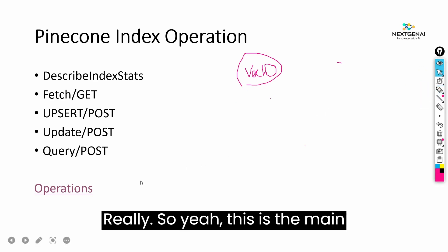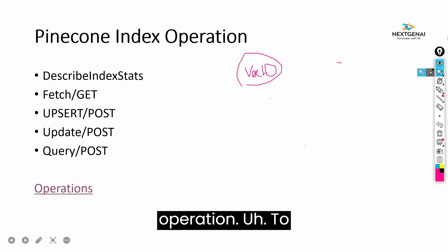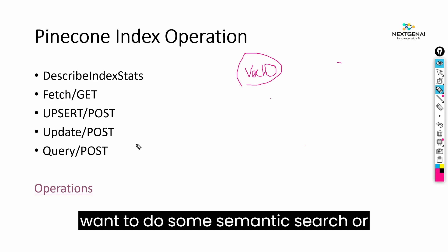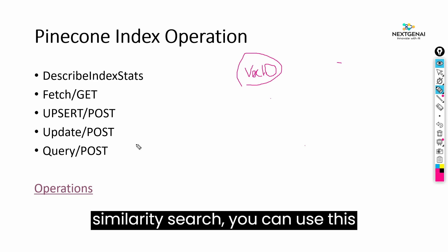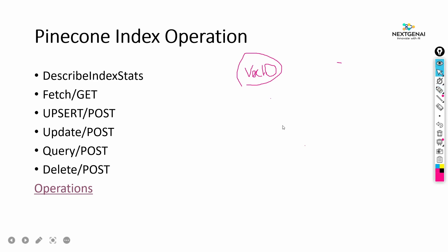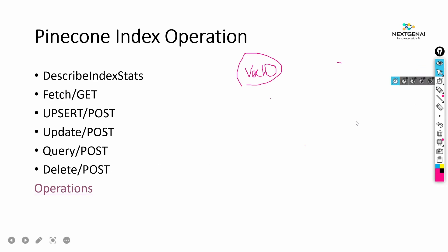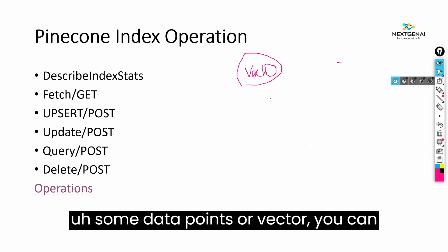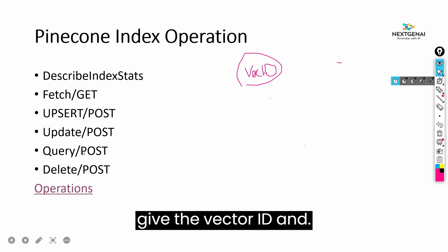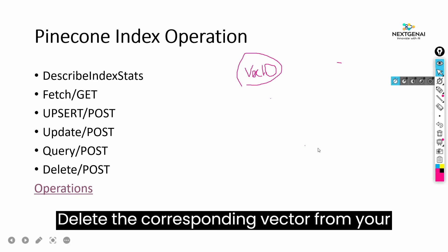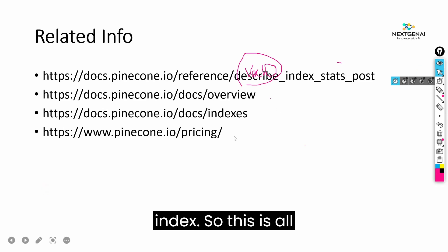The query operation is the main operation for vector databases. If you want to do semantic or similarity search, you can use this operation. For delete: if you want to delete a data point or vector, you can provide the vector ID and delete the corresponding vector from your index.